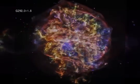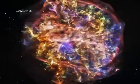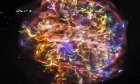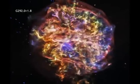The image for G292 shows oxygen in yellow and orange, and other elements such as magnesium in green, and silicon and sulfur in blue, that were forged in the star before it exploded.